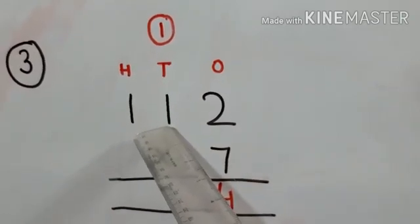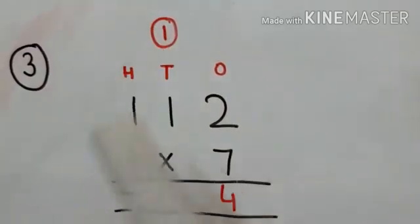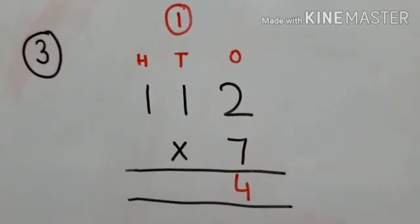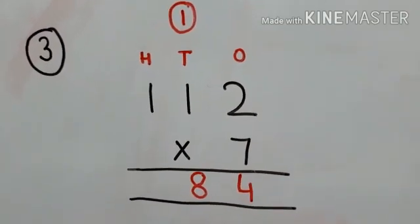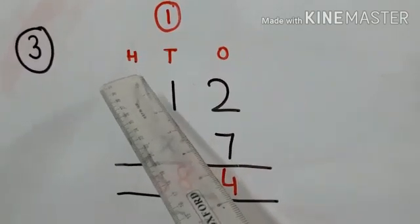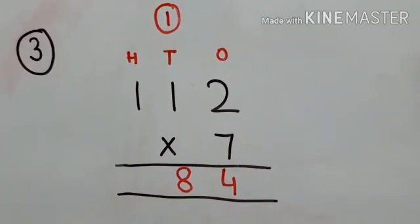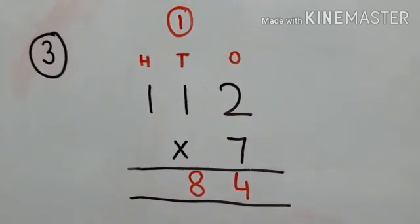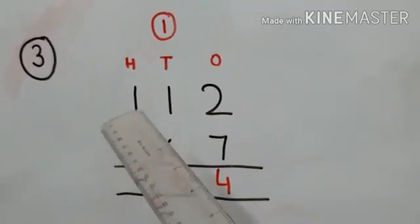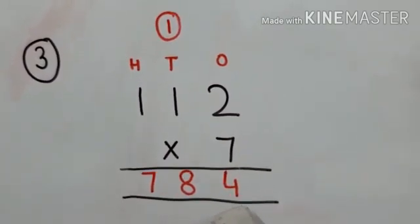In the tens place we are having 1, so we multiply 1 with 7. Seven ones are 7, plus 1 carried, gives 8. Now we multiply with the hundreds-digit number which is also 1 — seven ones are 7. So when we multiply 112 with 7, our answer is 784.